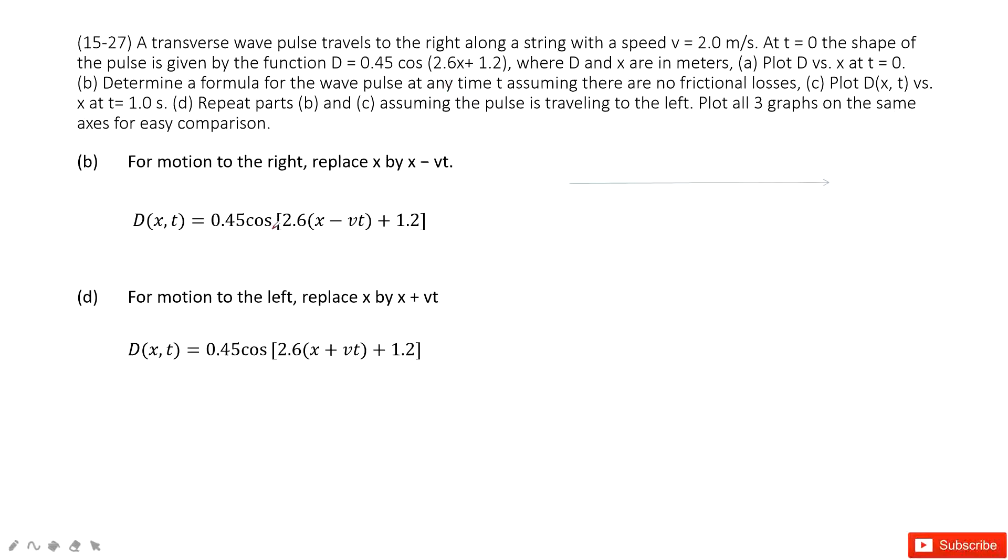So first one, we see if the motion to the right and this position is x. And before it happens, so how much distance it traveled? v times t. So this is distance it traveled.